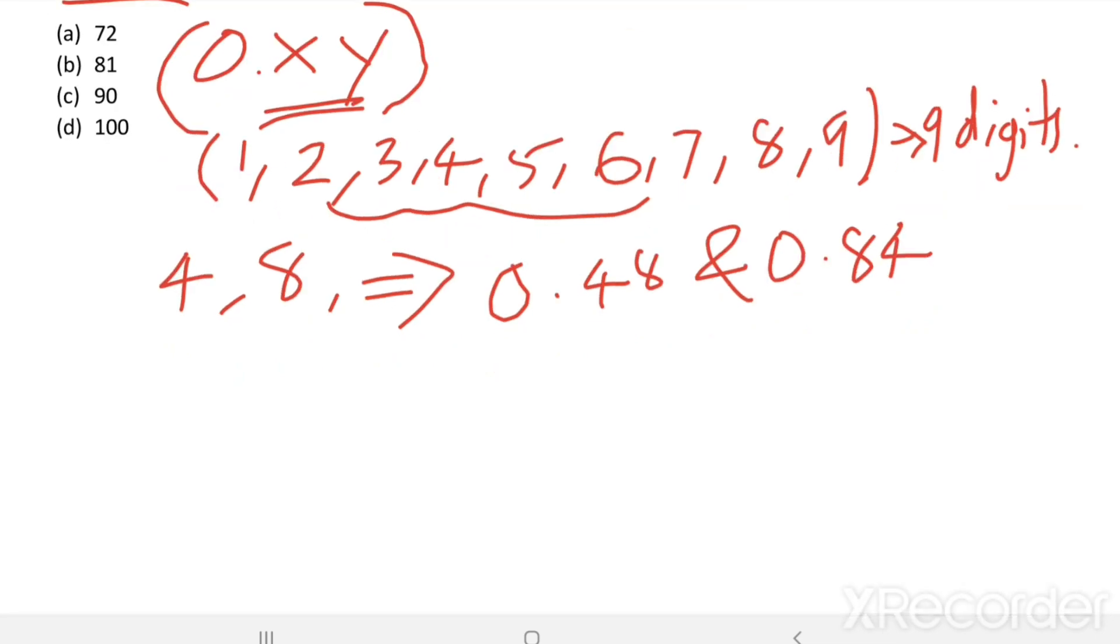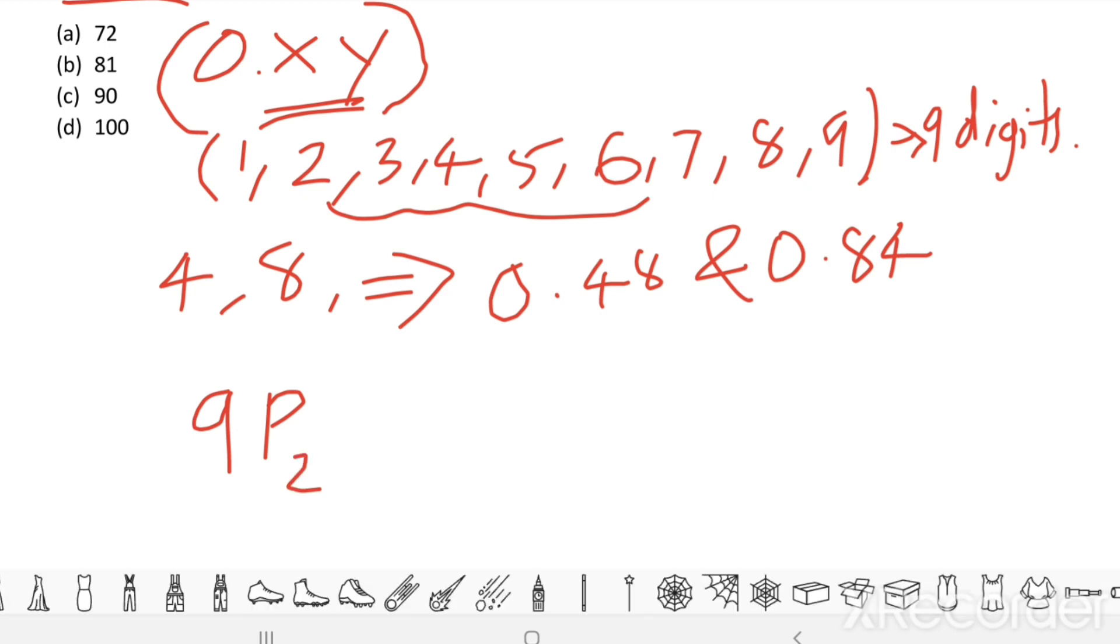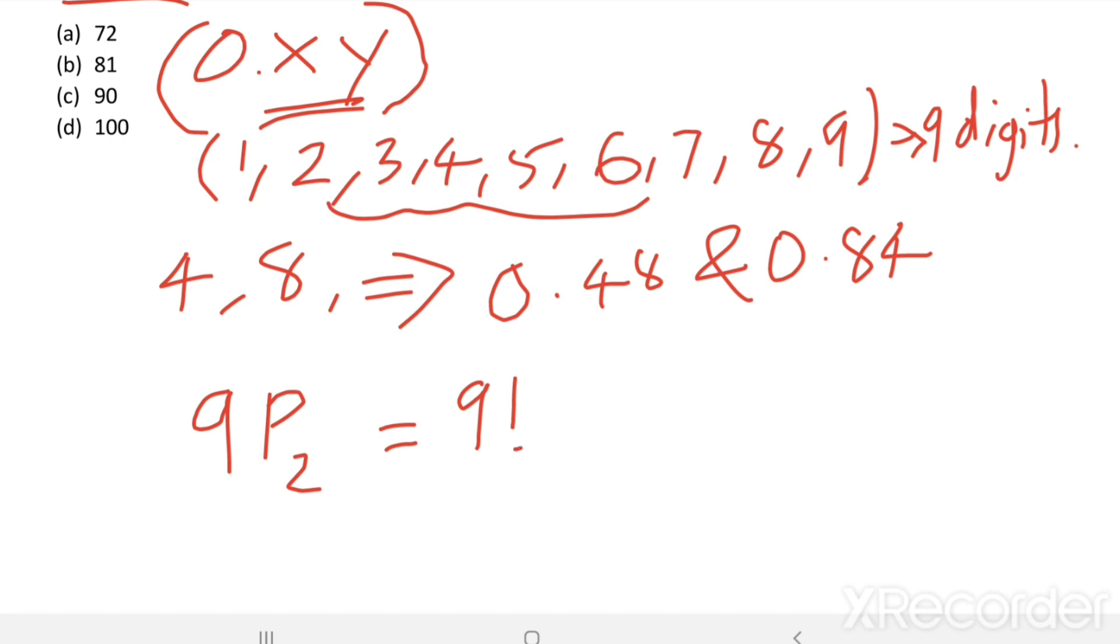We can arrange 2 digits out of 9 digits in 9P2 ways. This gives us 9 factorial divided by (9 minus 2) factorial.